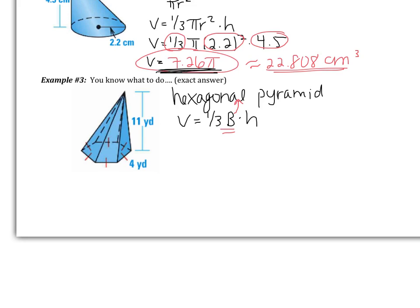I know all the sides are four. We're going to find the area of this hexagon — we've done this a bunch this chapter. We're going to start by breaking it up into triangles, and then I'm going to have to find this height. I know that four splits two and two. I'm going to leave you to finish the problem. Pause the video, try this one on your own, and come back with an exact volume. As a hint, you're going to have a radical in your answer. Good luck.